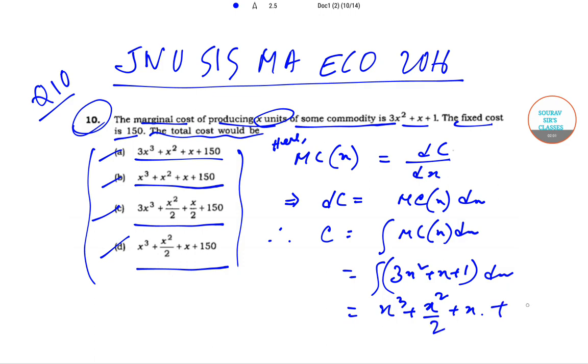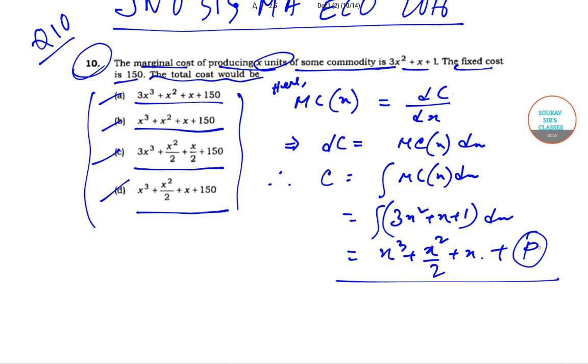Let the constant be p. Now we know in case of a cost function, the constant part is the fixed cost.